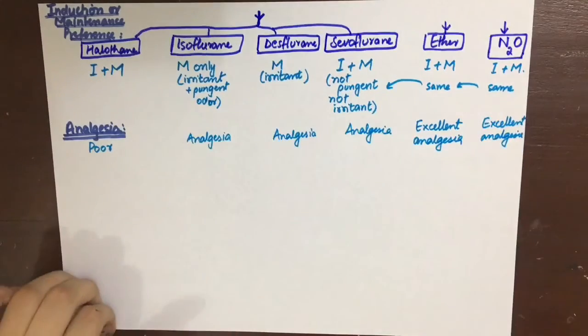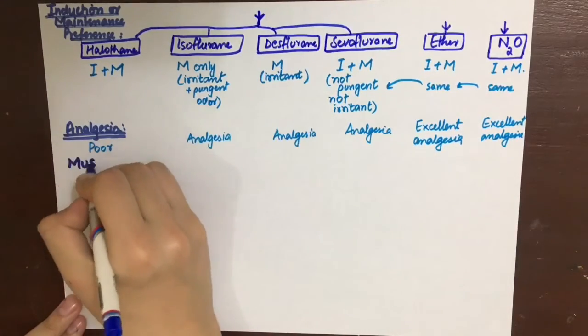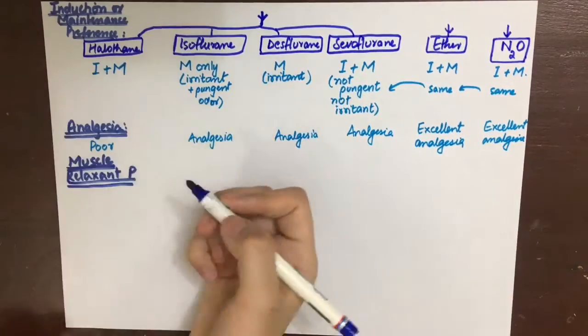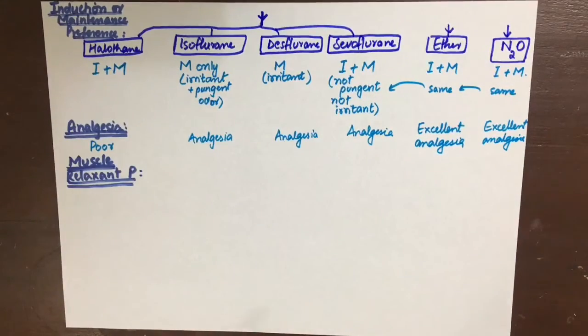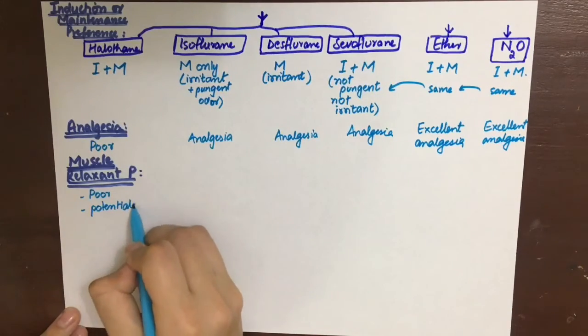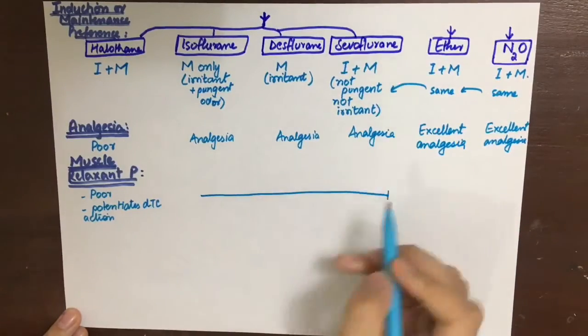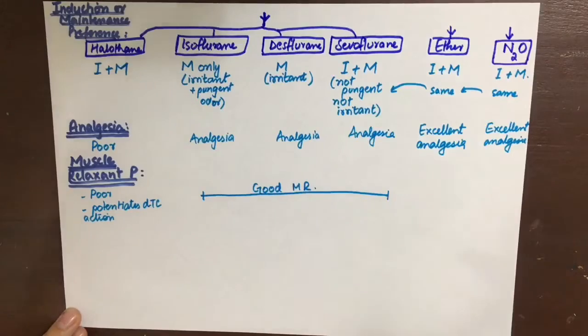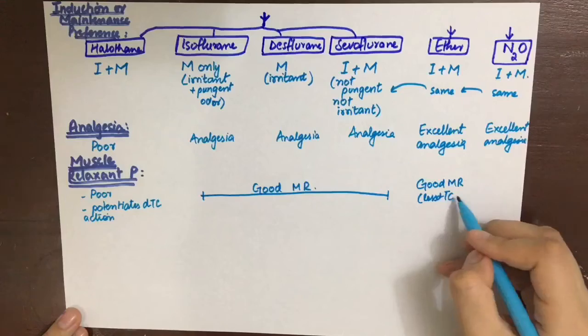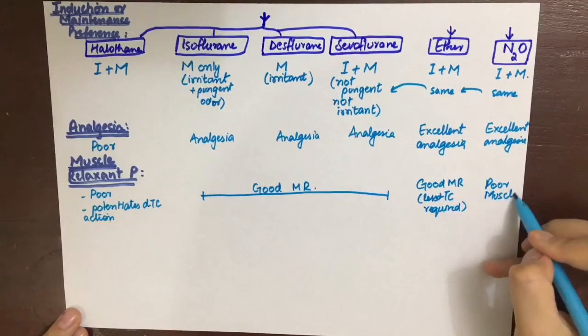The muscle relaxant properties of these general anesthetics go as halothane is a poor muscle relaxant. Although it can potentiate the actions of D-tubocurarine. Isoflurane, desflurane, and sevoflurane are good muscle relaxants. While ether is a good muscle relaxant, it decreases the dose of D-tubocurarine required. While nitrous oxide is a poor muscle relaxant.